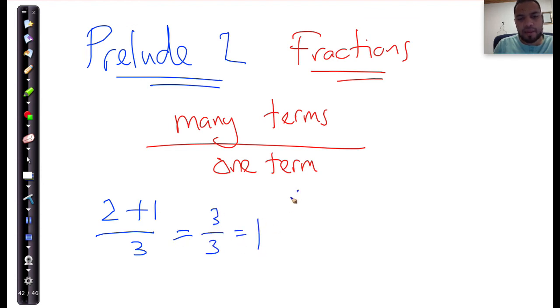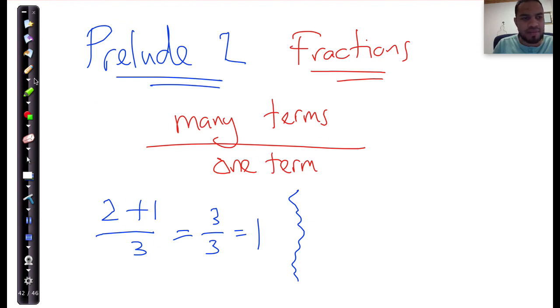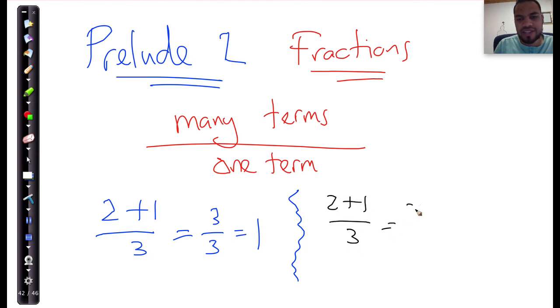And that's just 1. But now, to show you that I can break many terms over one term into multiple fractions. So, 2 plus 1 over 3 is the same as 2 over 3 plus 1 over 3, which is equal to 2 thirds plus 1 third, which is really just 3 thirds, which is equal to 1.